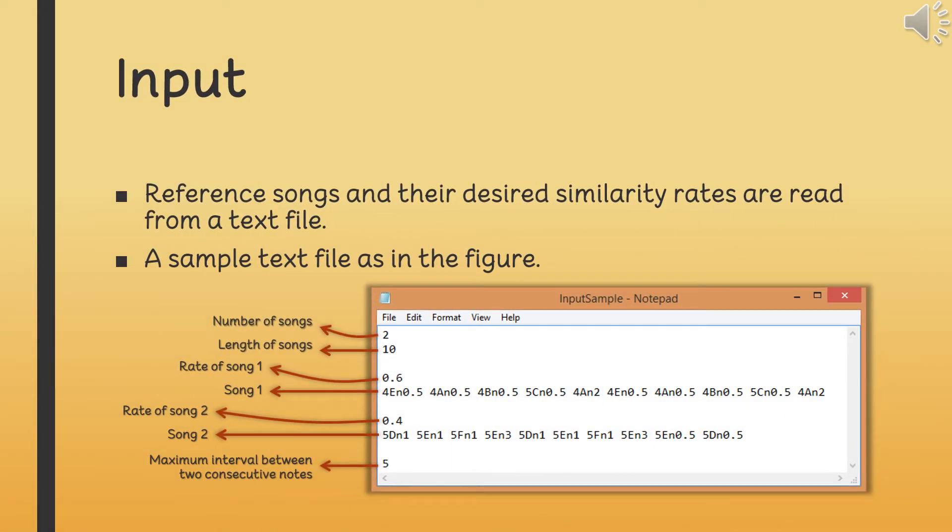Besides the parameters of genetic algorithm, like generation count, crossover and mutation rates, local search size and so on, reference songs and their desired similarity rates are read from a text file. Text file contains number of songs, length of the songs, similarity rate of a song, notes of that song, and optionally, maximum interval between two consecutive notes.